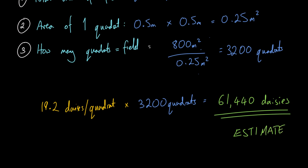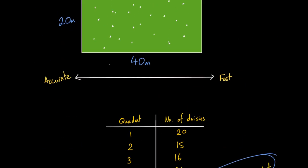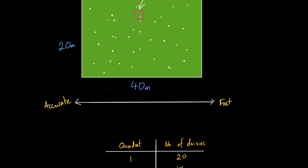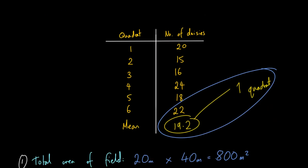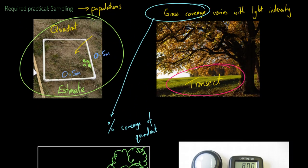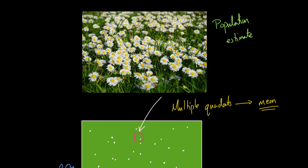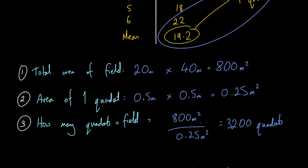It goes without saying this is an estimate. Out of a possible 3,200 quadrats I could have done, I only did six, so this estimate probably won't be massively accurate — it's likely towards the less reliable end. But that's the point: it's an estimate so you don't have to count an entire population. So those are two ways of sampling: seeing how a population changes as a factor like light intensity varies, or estimating the population within an area.